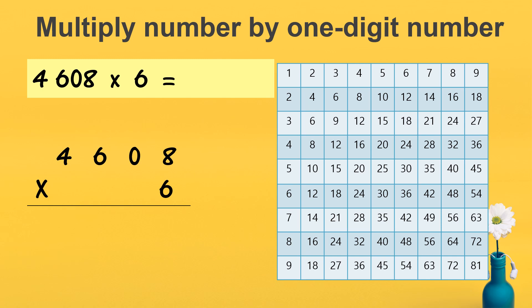We start from the one's place. We have to multiply starting from the one's place. 6 times 8 — you find the answer in the table on the right side. 6 times 8 is 48. I write 8 here, and 4 I regroup at the tens place.